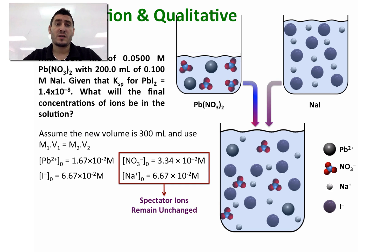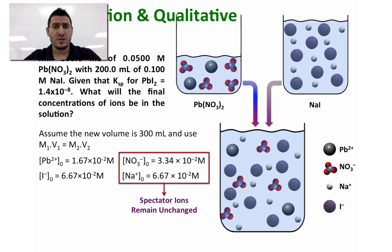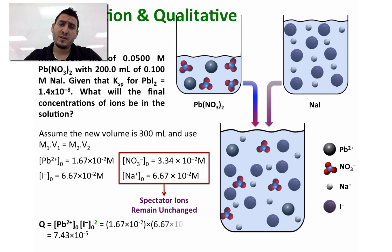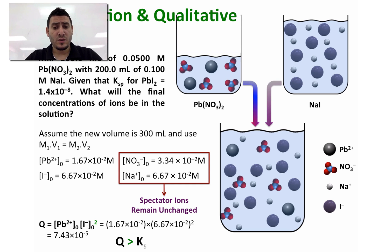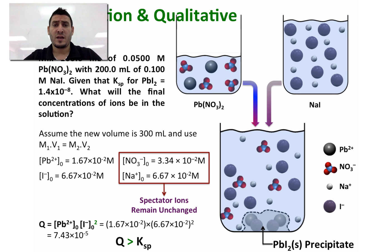This is important because if precipitation doesn't happen, the concentration of ions will not change. However, if precipitation does happen, the concentrations of Pb²⁺ and I⁻ will change. Calculating the reaction quotient, we find Q = 7.43 × 10⁻⁵, which means Q is greater than Ksp. Therefore, lead and iodide will form a lead iodide precipitate observed at the bottom of the flask.